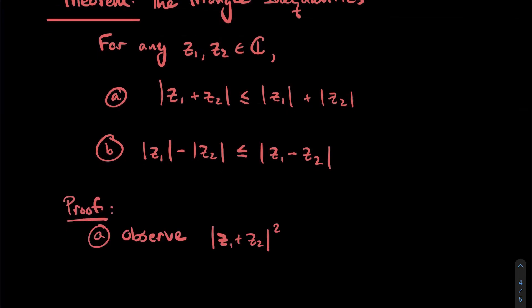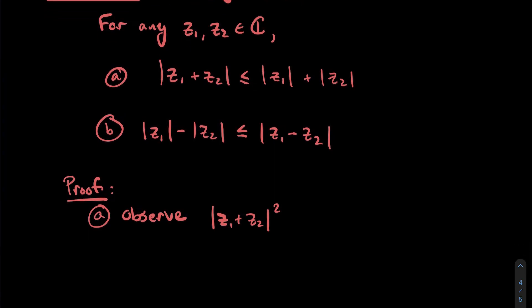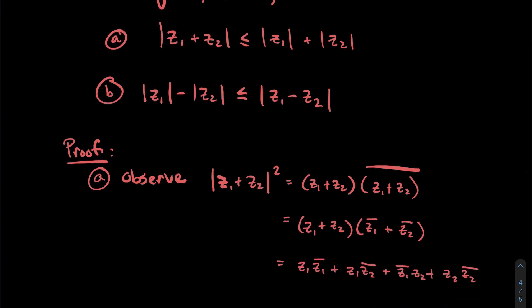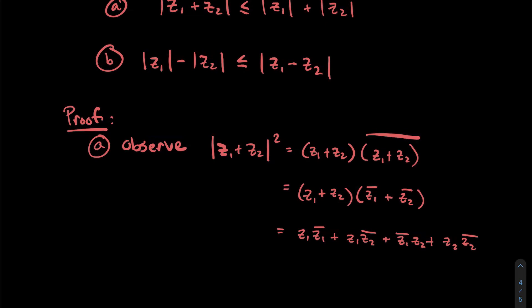For the proof of part (a), it's easier to work with the square. Consider |z₁ + z₂|². Using the property |w|² = w · w̄, we write |z₁ + z₂|² = (z₁ + z₂)(z₁ + z₂)̄. The conjugate of a sum splits: (z₁ + z₂)̄ = z̄₁ + z̄₂. Foiling this out gives z₁z̄₁ + z₁z̄₂ + z₂z̄₁ + z₂z̄₂.